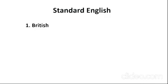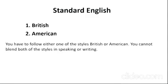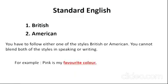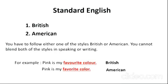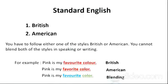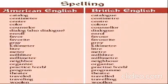Standard English: British and American. In the world, these two standards are most prominent. You have to follow either one of the styles — British or American. You cannot blend both styles in speaking or writing. For example: 'Pink is my favourite colour' — that is British spelling. 'Pink is my favorite color' — that is American. If you write 'favourite' in British style and 'color' in American style, that is blending, and you are not allowed to blend American and British style in one piece of speaking or writing.